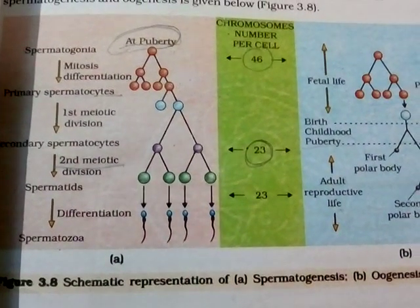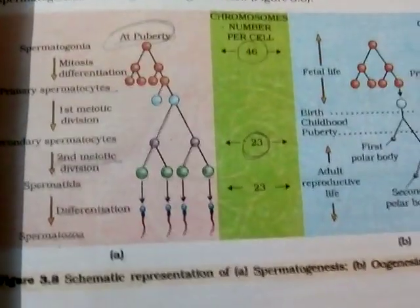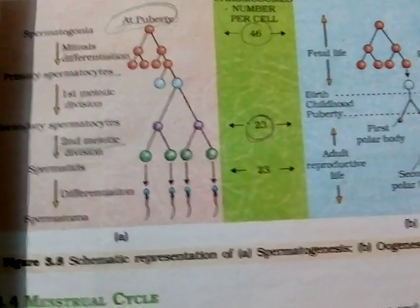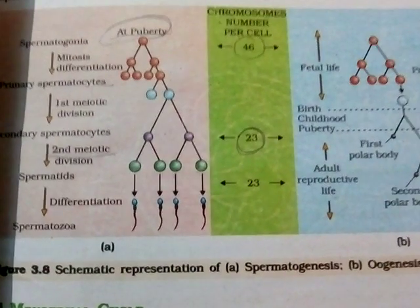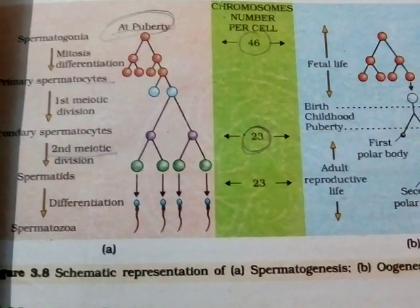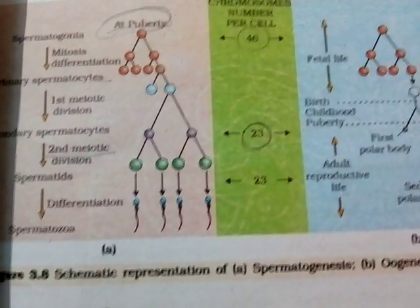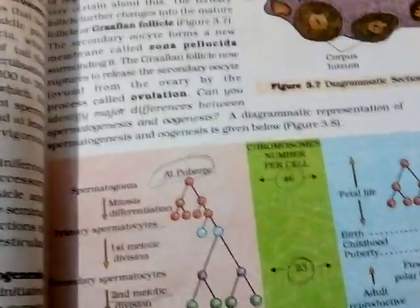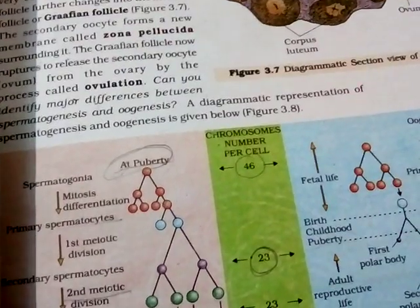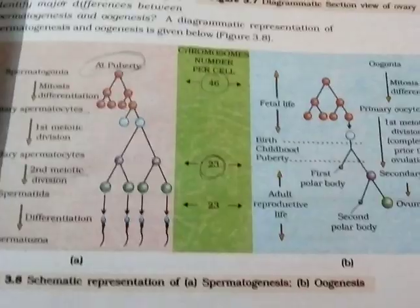Hello students, welcome to your Class 12 Biology class, in which I want to discuss the systematic representation of spermatogenesis and oogenesis, because it is important for your examination level, board level, and knowledge level. Spermatogenesis is the process through which sperms are formed in the male body, and oogenesis is the process through which ova are formed in the female body.